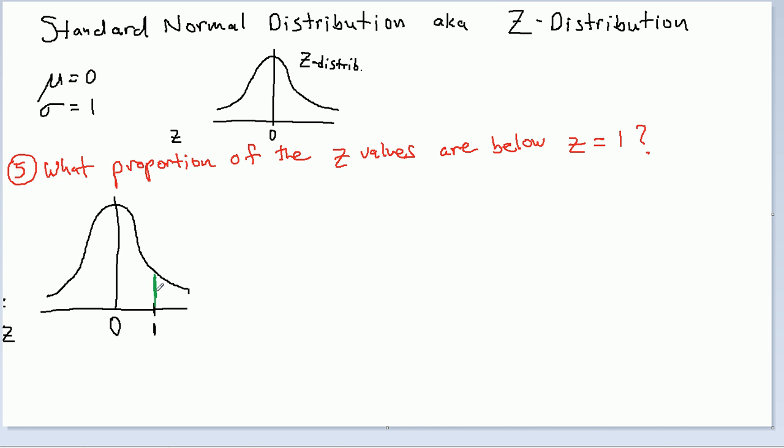So, what I'm shading is this way, below. But it doesn't stop at 0. It's below Z equals 1. So, it includes everything below Z equals 1. I'm shading the entire curve to the left of Z equals 1.